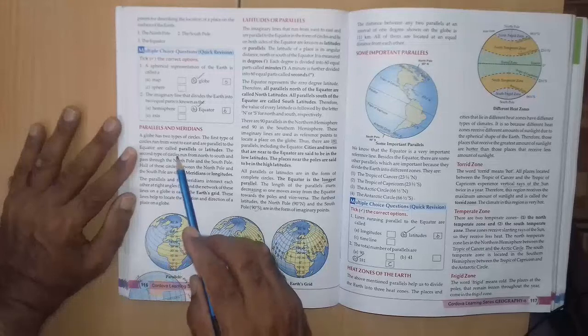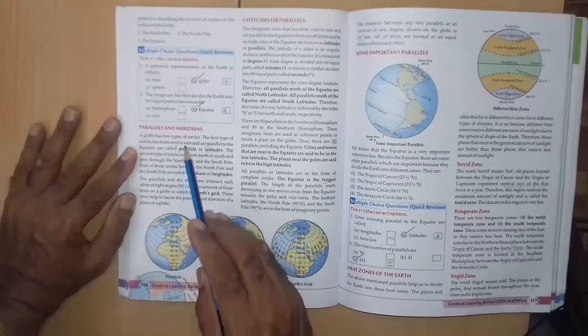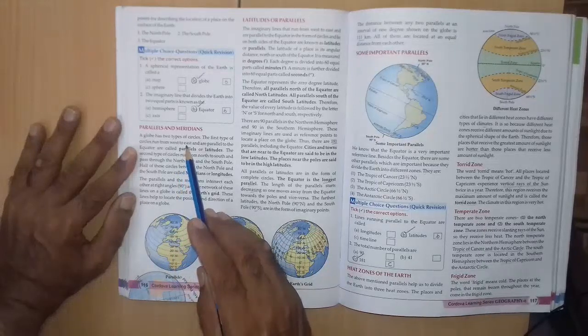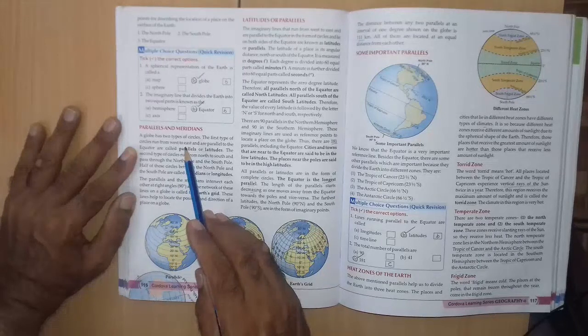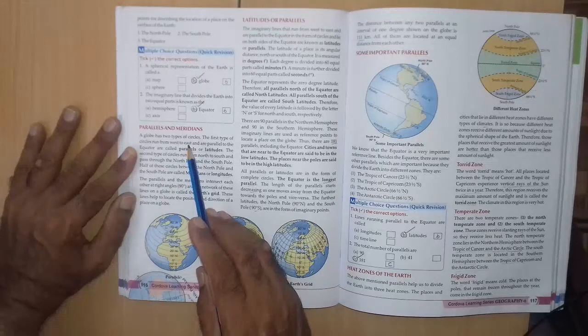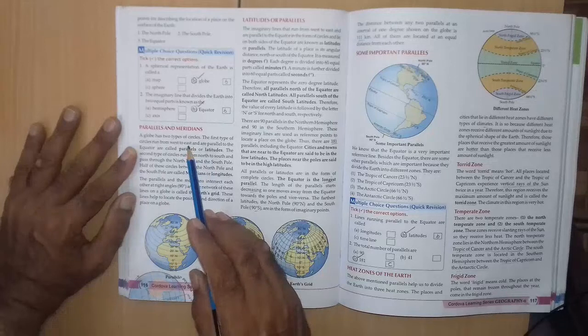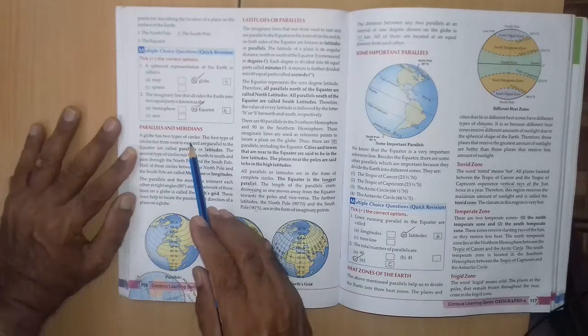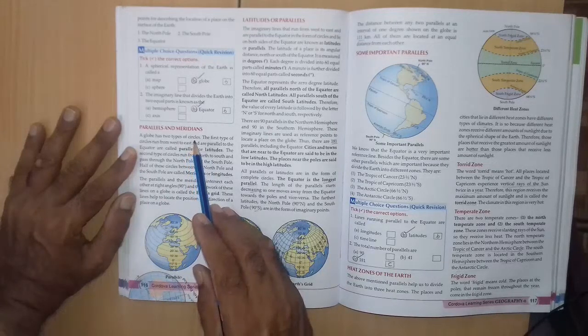Now question number 2nd, the imaginary line that divides the earth into two equal parts is known as A hemisphere, B equator, C axis. Right answer is B equator.